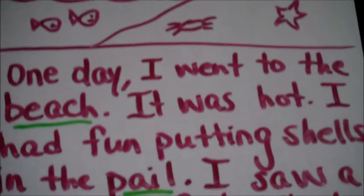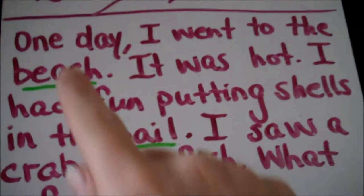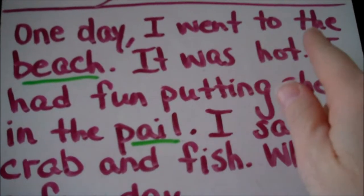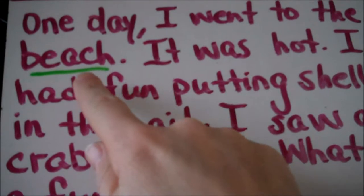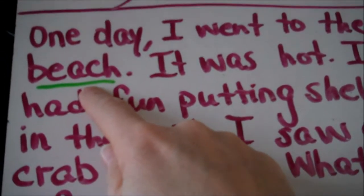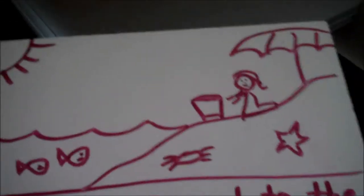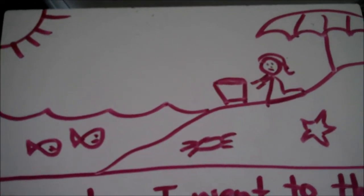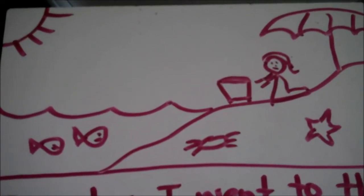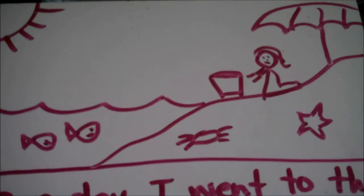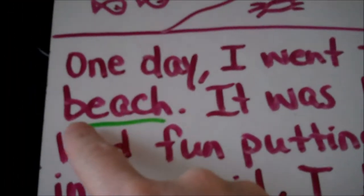For example, in this particular passage: 'One day I went to the...' and let's say your child didn't know what this word is. They can use their picture clues or picture cues to figure out — they're not at the zoo, they're not at the park. Beach. Looks like a beach. Starts with a B.